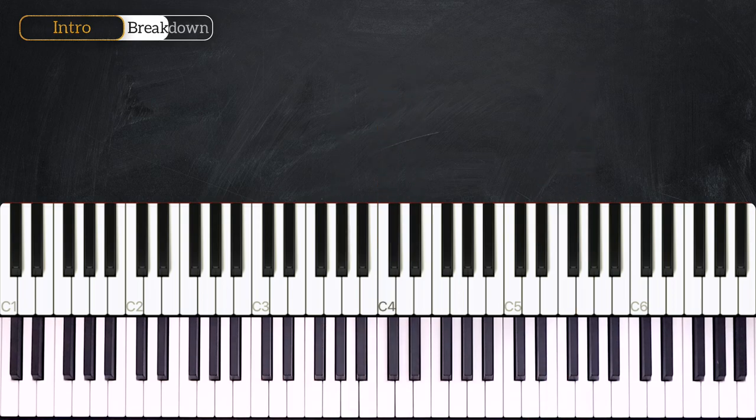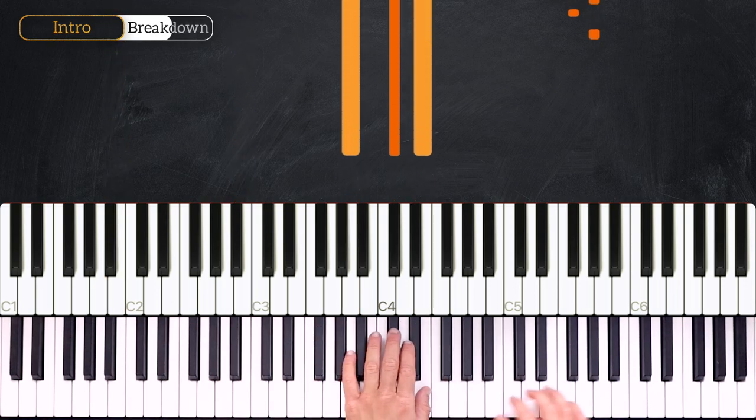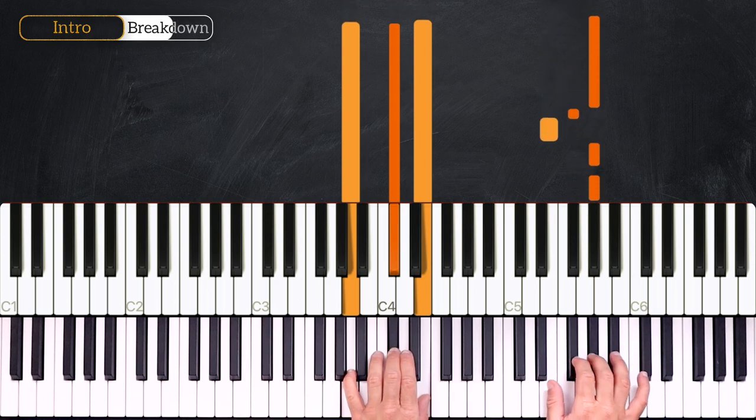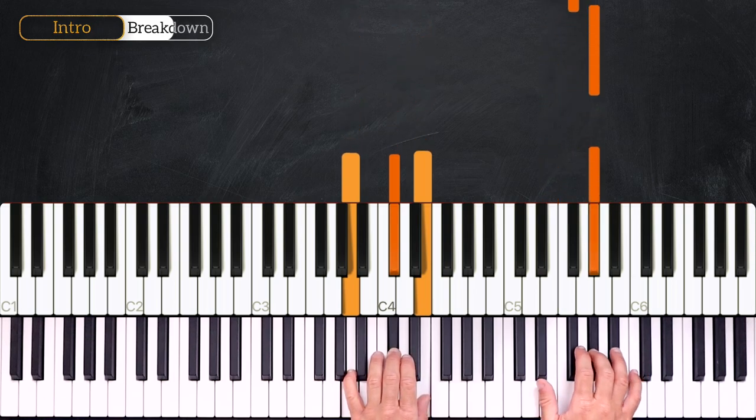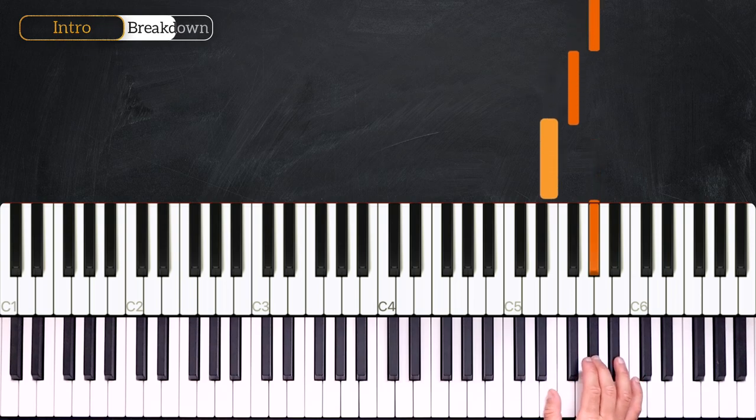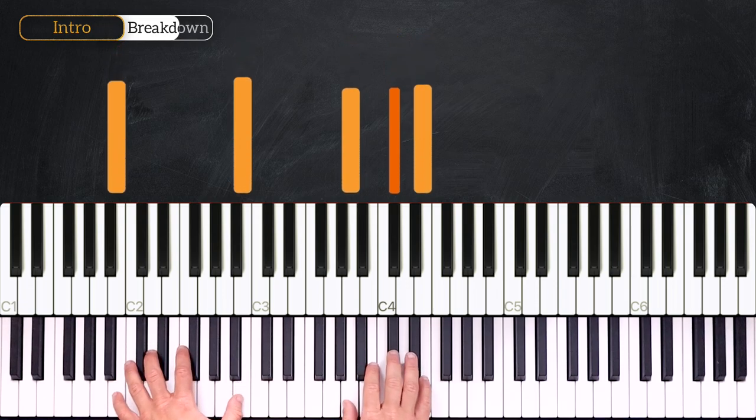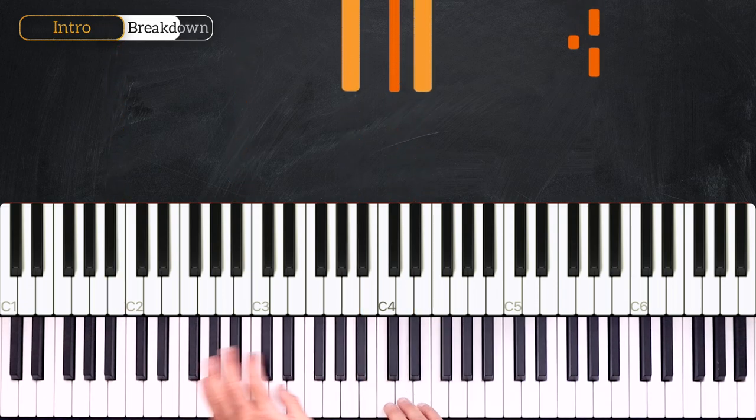Now we just have to play this thing again transposed one half step above. So we'll play B11 and then this melody: G sharp, F sharp, G sharp, G sharp, E, F sharp, G sharp. Once again 3, 4, 1, 2, 3, 4.